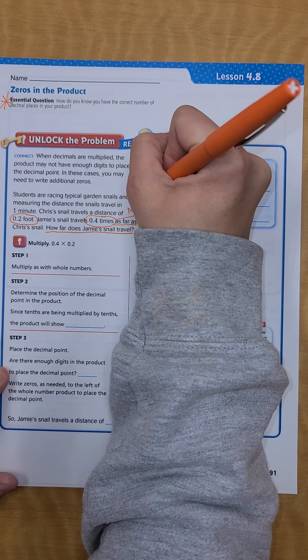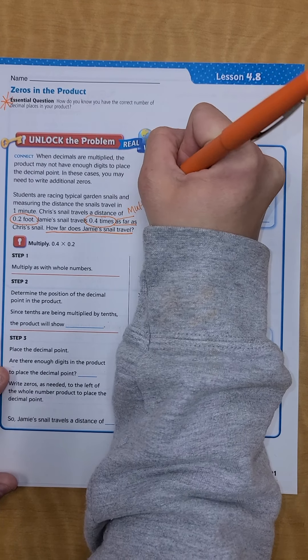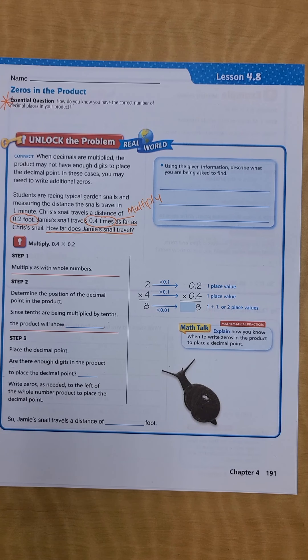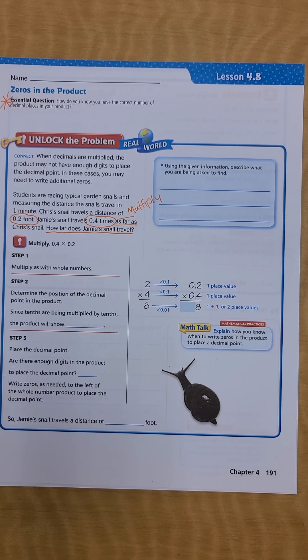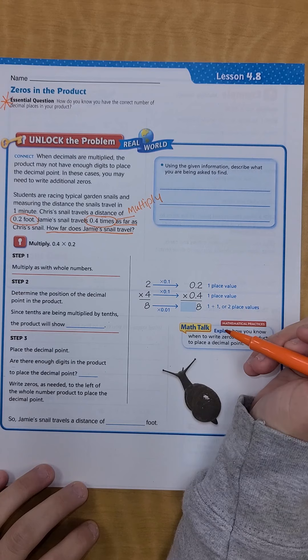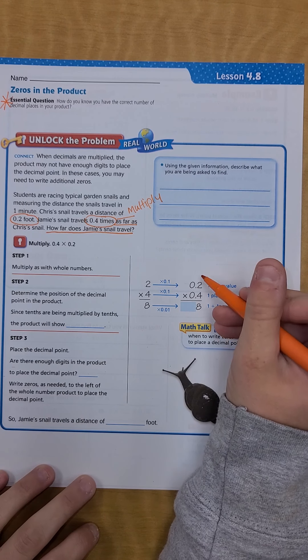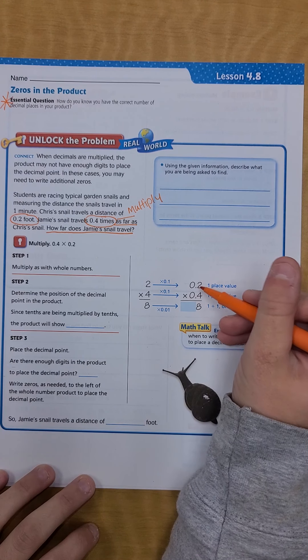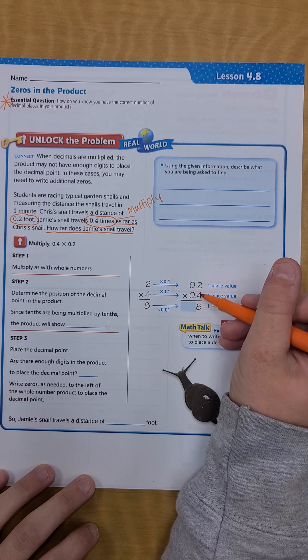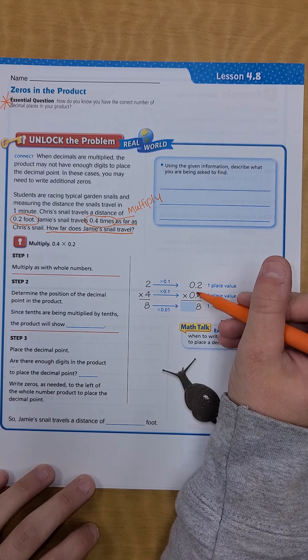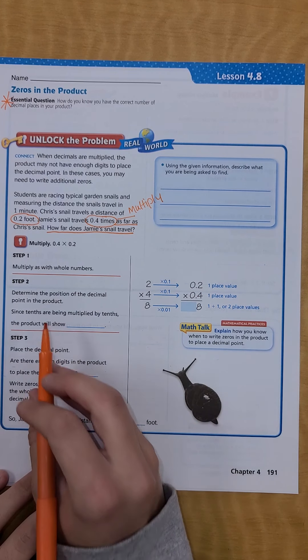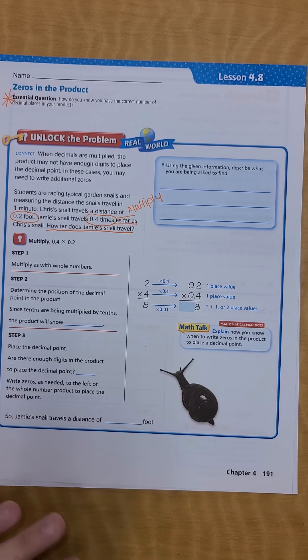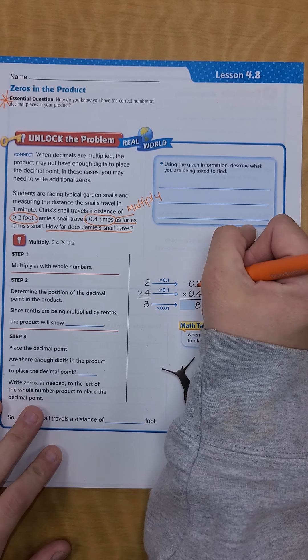I know I'm going to multiply when I see the word four times as much as. Times as much as is going to tell me I'm going to be multiplying. So we are going to multiply the whole numbers. We're going to multiply just like I've taught you, set it up just like normal. We know that two times four is eight and all of these others are zero.